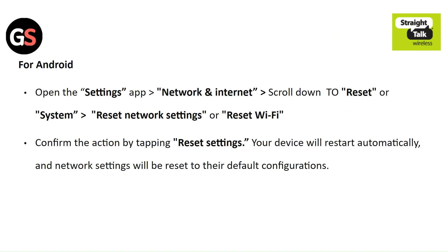For Android, open the Settings app, then Network and Internet. Scroll down to Reset or System. Click on Reset Network Settings or Reset Wi-Fi. Confirm the action by tapping Reset Settings. Your device will restart automatically and network settings will be reset to the default configurations.